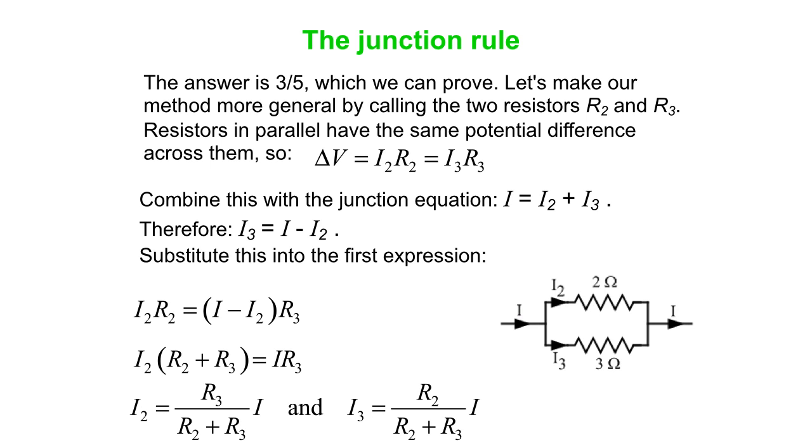So in this case, if we do the two and the three ohms, then our denominator is five ohms, and I2 ends up being three ohms over five ohms, three-fifths of I, and I3 is two ohms over five ohms times I, in other words, two-fifths of I. So, we've accounted for all of I.